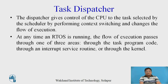Now, the task dispatcher. The dispatcher gives control of the CPU to the task selected by the scheduler by performing context switching and changes the flow of execution. At any time an RTOS is running, the flow of execution passes through one of three areas: through the task program code, through an interrupt service routine, or through the kernel.